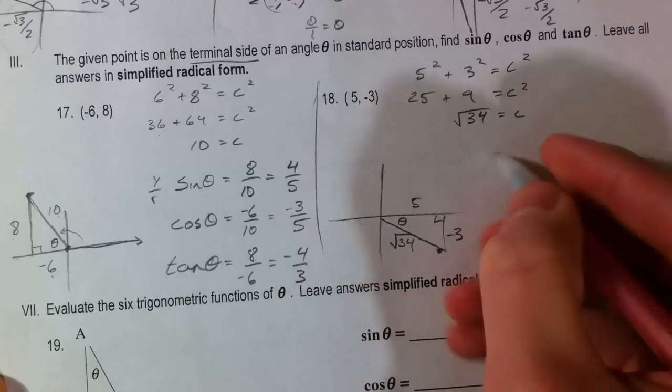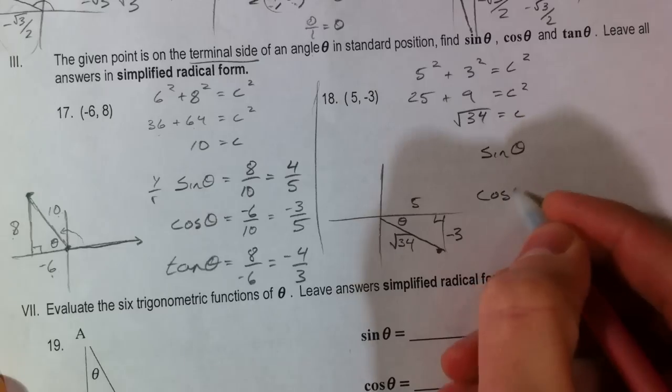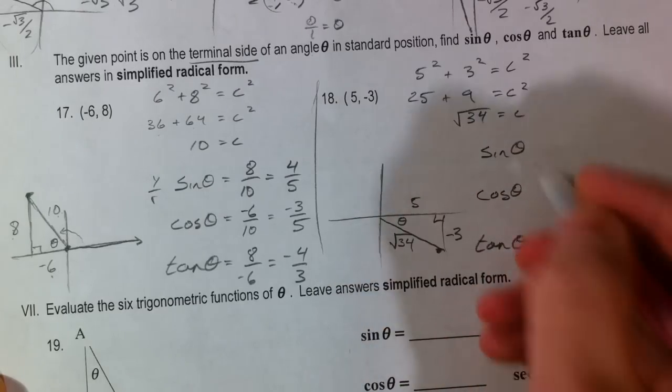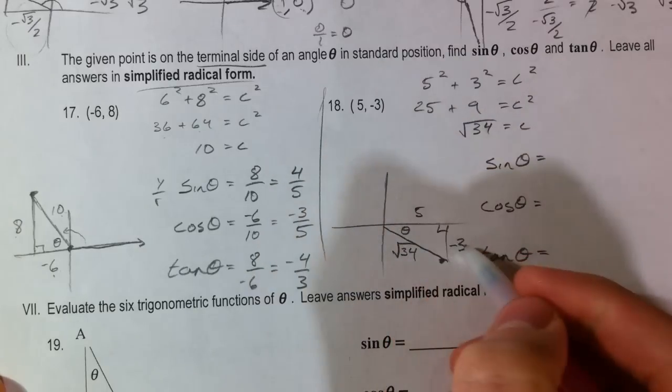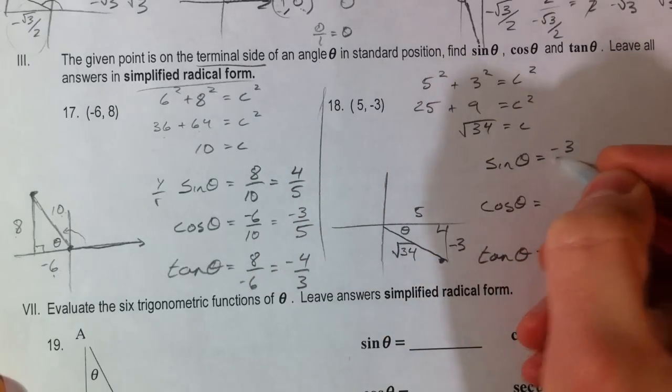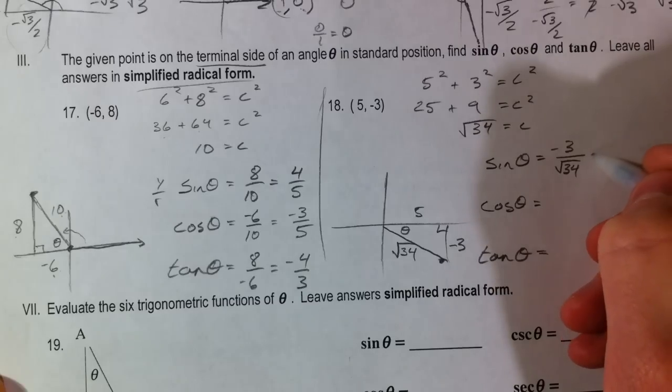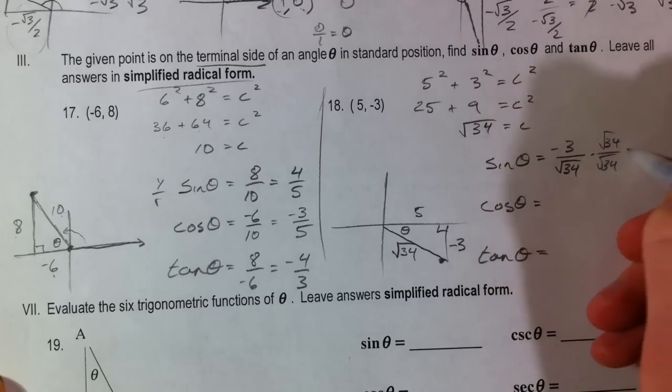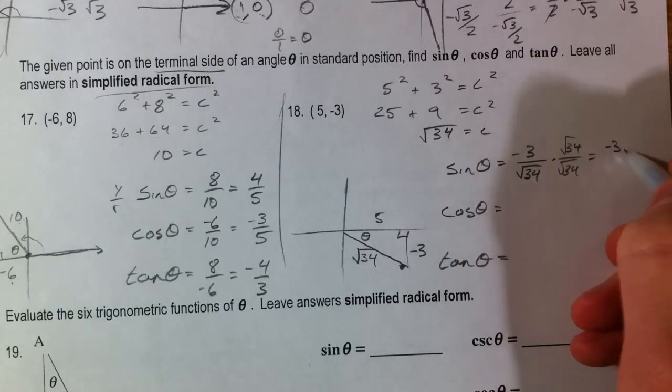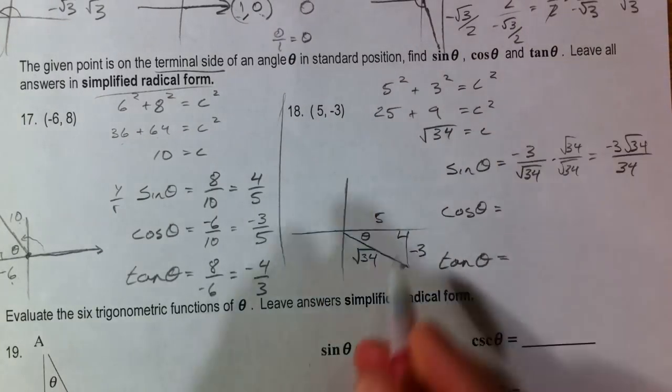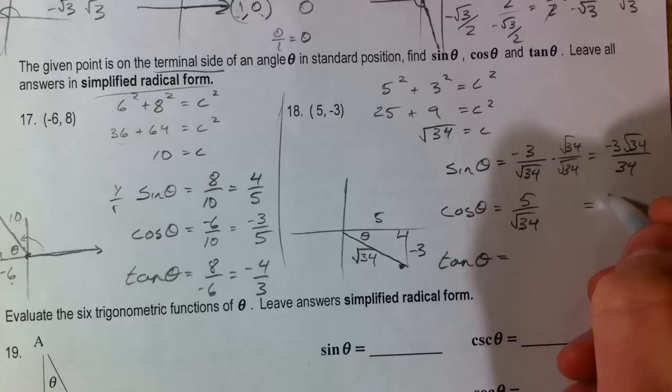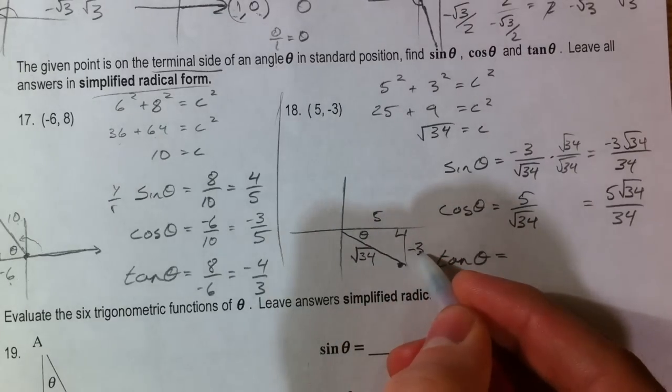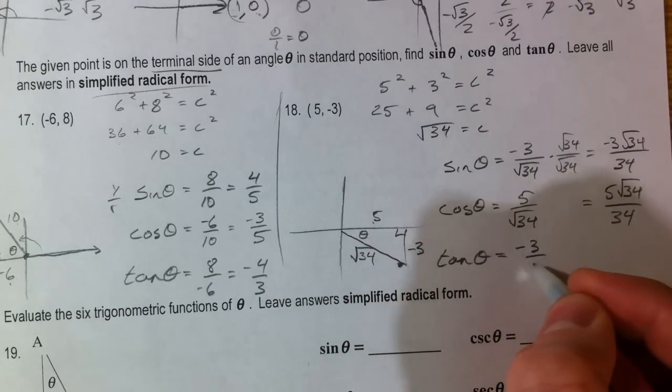So, again, our reference angle. Sine of our angle, cosine of our angle, tangent of our angle. We want to leave them in simplified radical form. And so sine is going to be opposite over hypotenuse. Negative 3 over root 34. And so you're going to want to rationalize that. Root 34 over root 34. And get negative 3 root 34 over 34. Cosine is going to have the same thing happen. And so you can see that root 34 over 34. 5 root 34 over 34. Tangent, opposite over adjacent. Negative 3 over 5.